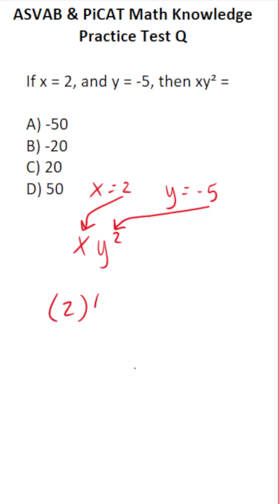So this becomes 2 times negative 5 squared. According to the order of operations, that is PEMDAS, you're always going to do exponents before you do multiplication.